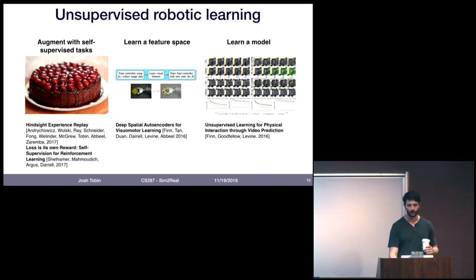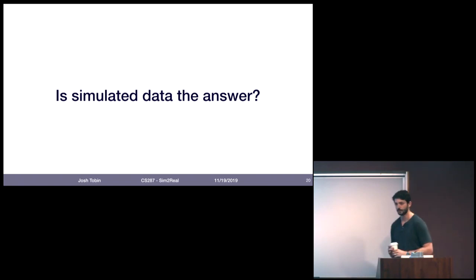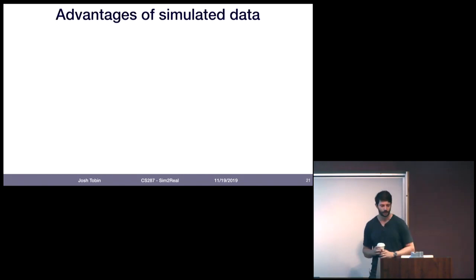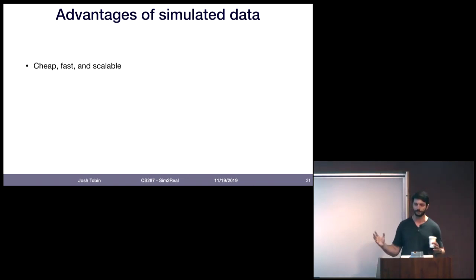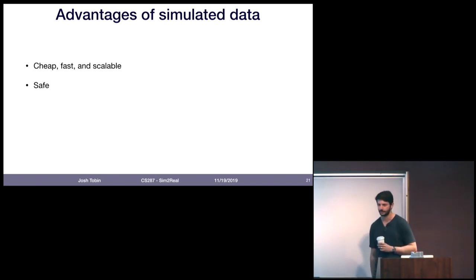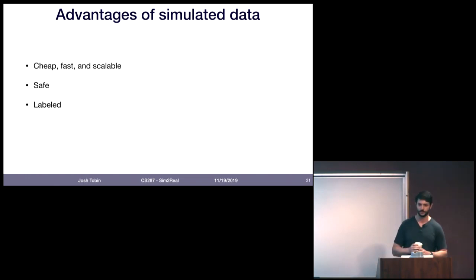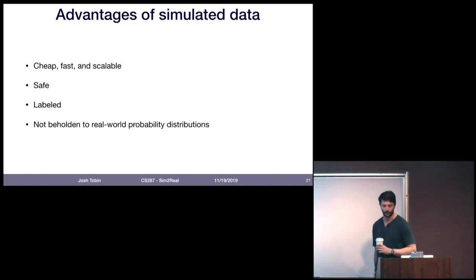But the question I want to focus on is: what can we do with simulated data? If simulated data works, it has really big advantages. Unlike robotic data, simulated data is super cheap — basically zero marginal cost. It's very fast; you can run simulators faster than real time. It's scalable — you can run a simulation on every core in your data center without buying new robots. And maybe more importantly, it's safe: you can't actually damage something by running a simulation.